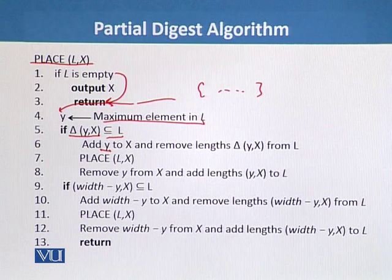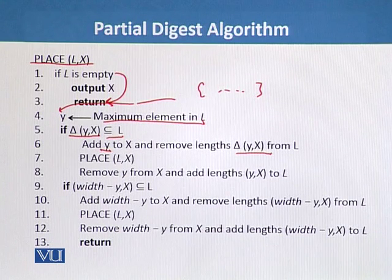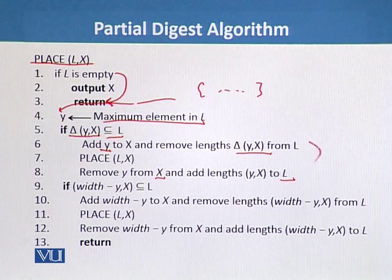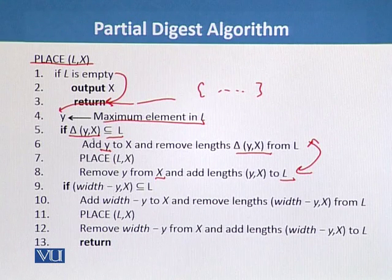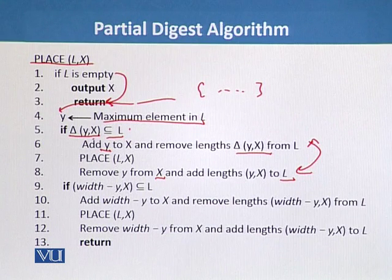We remove those calculated distances from L. If the calculated value is not a subset of L, then we remove y from x and place it back — these two steps are opposite to each other. If the value is a subset of L we remove it from L; if it is not, we add it back.